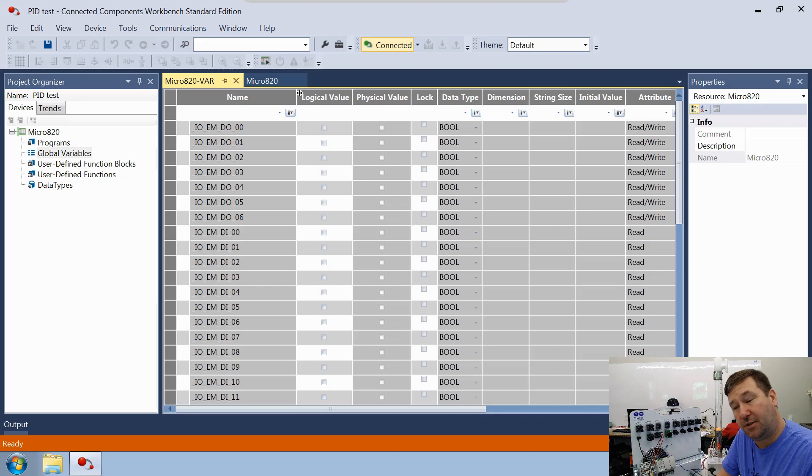But the first thing we're going to come to is our digital output. So this is IOEMDO00, which is output zero. And that should be our damper open. And right now we have it open.